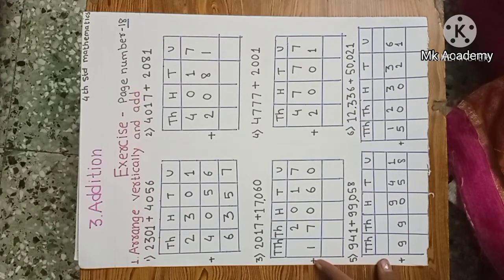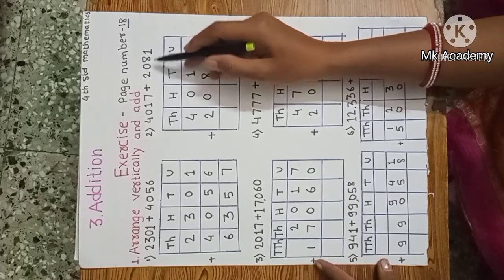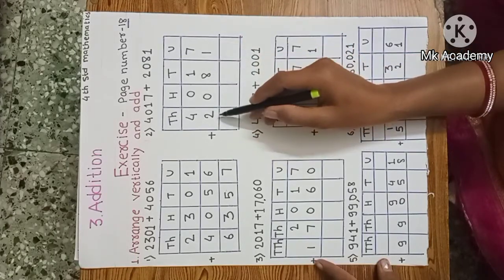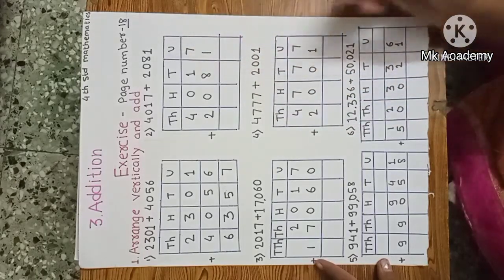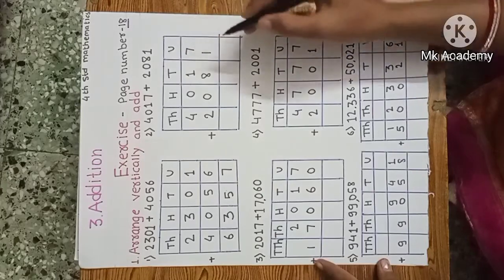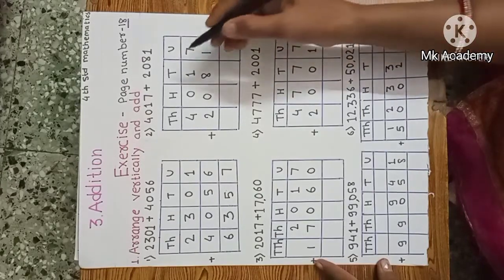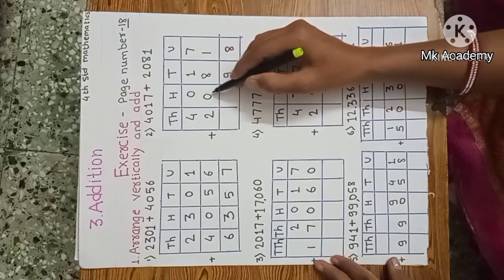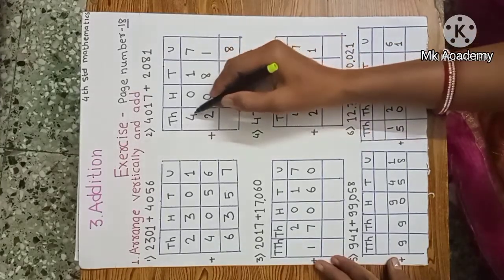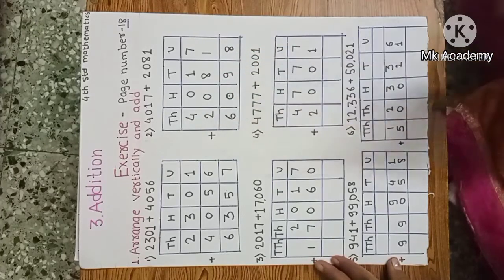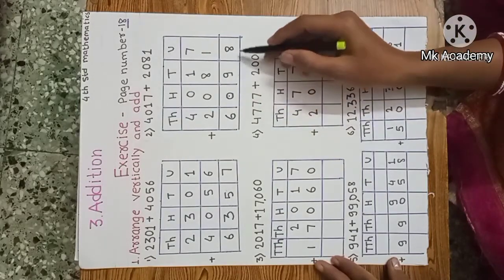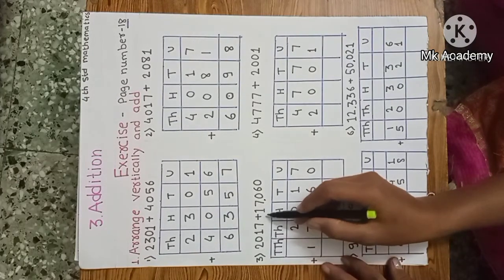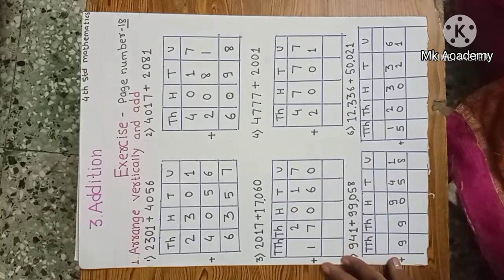Second example: 4700 plus 2081. Write down 4017 plus 2081 in vertical arrangement. Start from unit place: 7 units plus 1 unit is 8; 1 ten plus 8 tens is 9 tens; 0 hundreds plus 0 hundreds; 4000 plus 2000 is 6000. The answer is 6098.